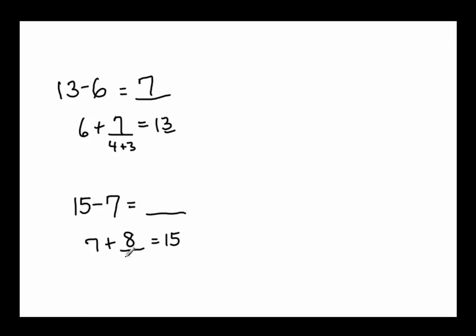And just to think about it differently in case you didn't know that this was 8, you can say 7 and what make 10 because 15 is made up of 10 and 5. 7 and 3, and 10 and what make 15? 10 and 5. So 3 plus 5 is 8 and that's the missing part.